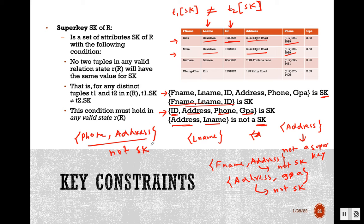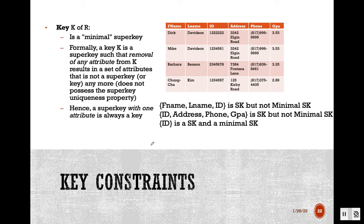So a super key is a set of attributes that can uniquely identify each record. The key of a relation is the minimal super key. A key is a super key such that if we remove any one attribute from it, the remaining set is no longer a super key.